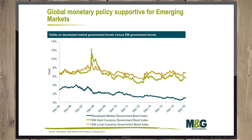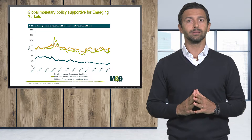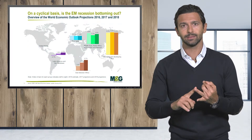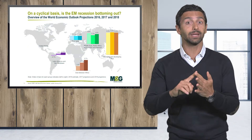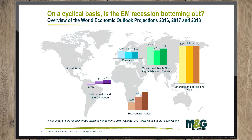But in reality, emerging markets are very different in terms of countries and in terms of regional behaviors. The typical regions we identify in emerging markets are Asia, Latin America, Africa, Middle East, and Eastern Europe.